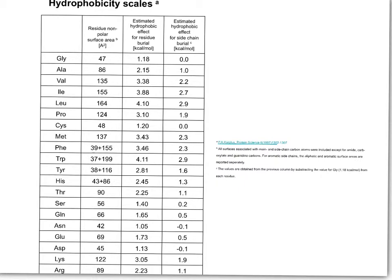Here is a hydrophobicity scale in more detail for the 20 amino acids. There are hydrophobic aliphatic amino acids and aromatic-type amino acids. The most hydrophobic amino acid in terms of residue burial is leucine as well as tryptophan. Lysine, which is basic, also has a substantial surface area and a big effect because of the aliphatic chain between the amine and the C-alpha carbon.